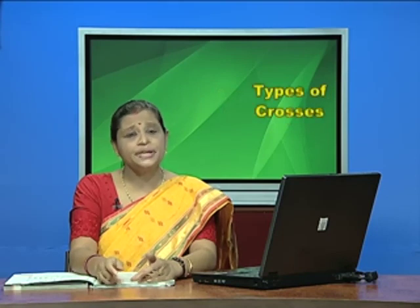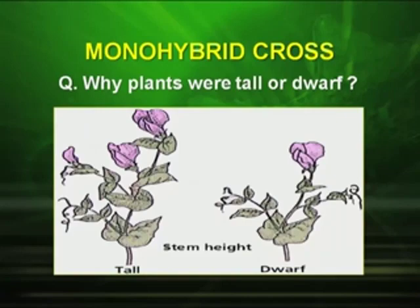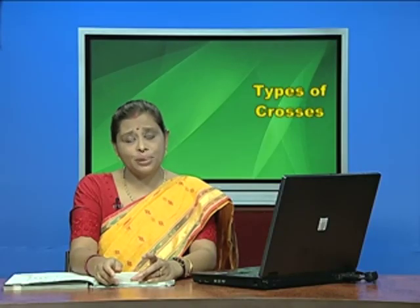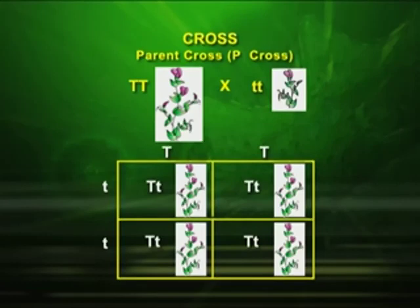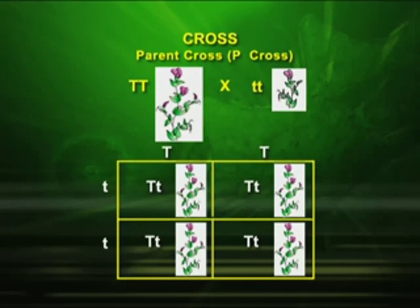Now, let us see which type of crosses he used. The first cross is the monohybrid cross. Mendel wondered why some plants were tall and some were short. So he crossed a tall plant with a dwarf plant. The parent crosses: capital T, capital T stands for the tall plant; small t, small t stands for the short plant. In the first generation, he obtained all tall plants with the genotype capital T and small t. So phenotypically, all plants were tall.